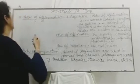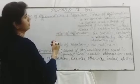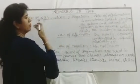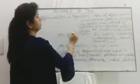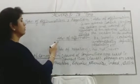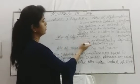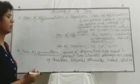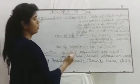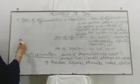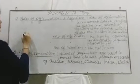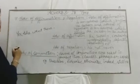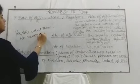Next is adverb of affirmation and negation. Adverb of affirmation confirms the action — examples include: yes, surely, certainly, undoubtedly, definitely, absolutely. Adverb of negation denies the action — examples: no, not, never. For example: 'Yes, she went there' uses affirmation, while 'He never went there' uses negation.